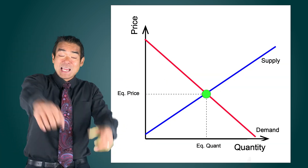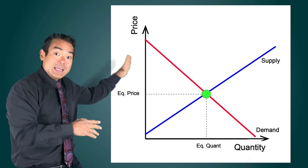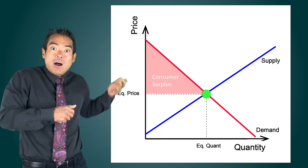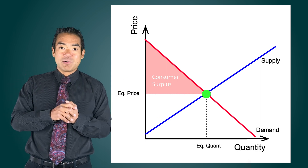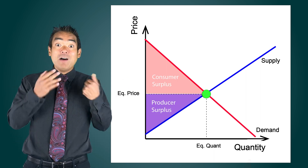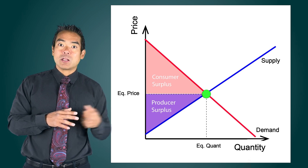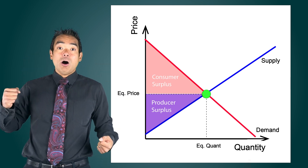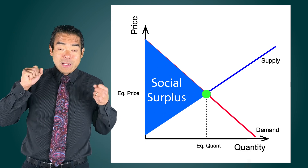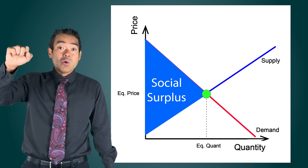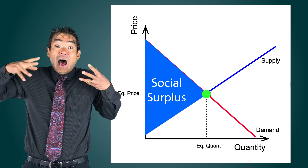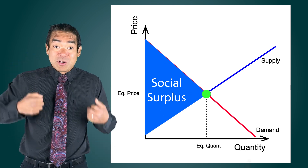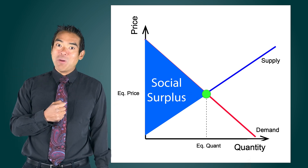When we put supply and demand on the same diagram, we can identify equilibrium price and equilibrium quantity, but also consumer surplus — the area below demand, above equilibrium price, and to the left of equilibrium quantity — and producer surplus — the area above supply, below equilibrium price, and to the left of equilibrium quantity. If we add consumer surplus and producer surplus together, this is what we call social surplus. In well-functioning markets, there is no combination of price and quantity that will yield a higher social surplus than equilibrium price and equilibrium quantity, which is another reason why we like equilibrium so much in economics.